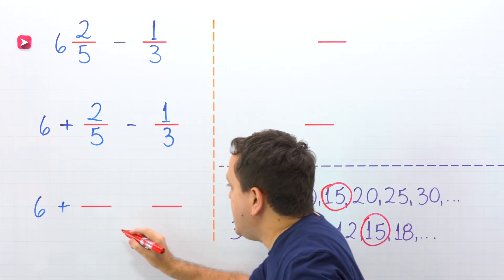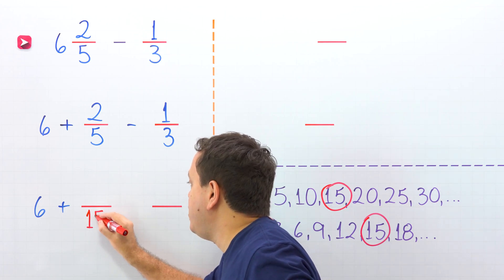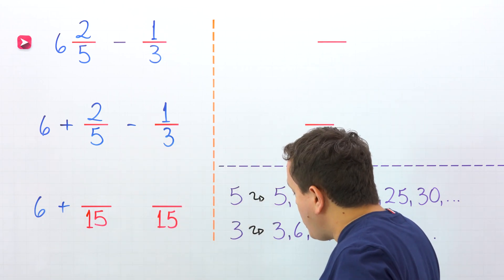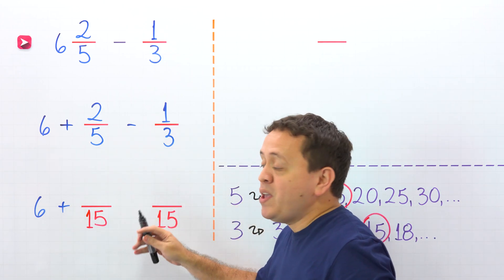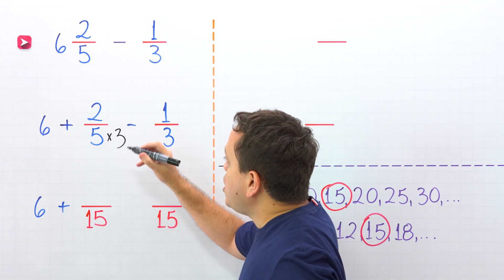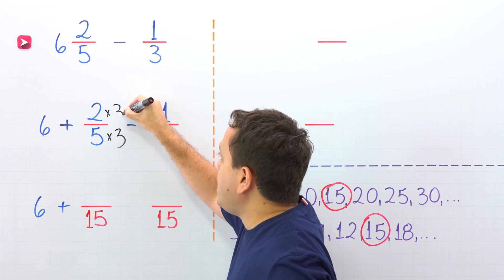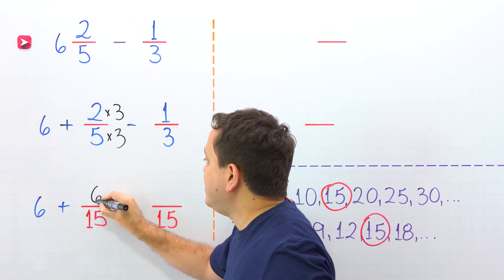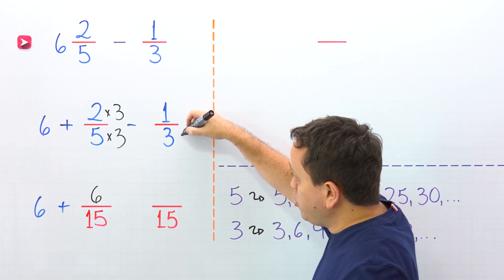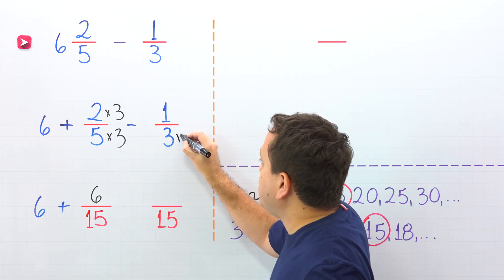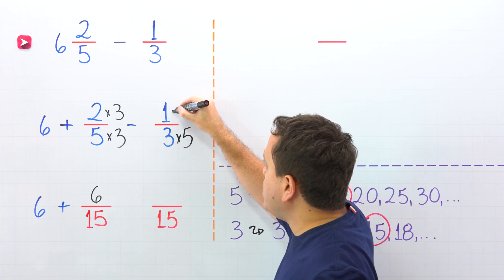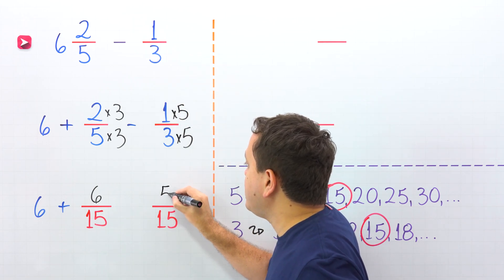Now, for each fraction, we need an equivalent fraction with a denominator of 15. Let's start with 2 fifths. By what number should we multiply 5 to get 15? By 3, because 5 times 3 gives us 15. Whatever we do to the bottom, we must do to the top, and 2 times 3 gives us 6. Let's continue with 1 third. By what number should we multiply 3 to get 15? By 5, because 3 times 5 gives us 15. Whatever we do to the bottom, we must do to the top, and 1 times 5 gives us 5.